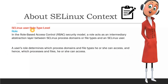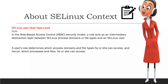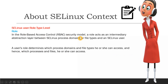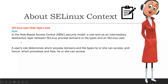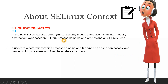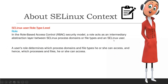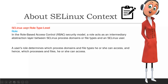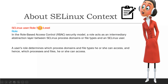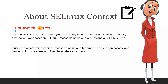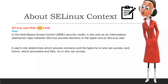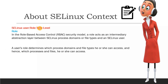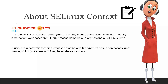The role is the second part of the labeling, appearing after a colon. In the role-based access control security model, the role acts as an intermediary abstraction layer between the process domains or file type and the SELinux user. So the role acts like a bridge between the user and the type of the file.